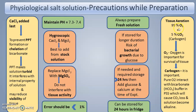For tissue aeration, 95% O2 and 5% CO2 (carbogen) is given to the tissue. Oxygen is important for survival of the tissue. Pure O2 alone would interact with the bicarbonate buffer in PSS, causing CO2 loss and making the solution alkaline. That is why the carbogen combination is used for oxygenation.